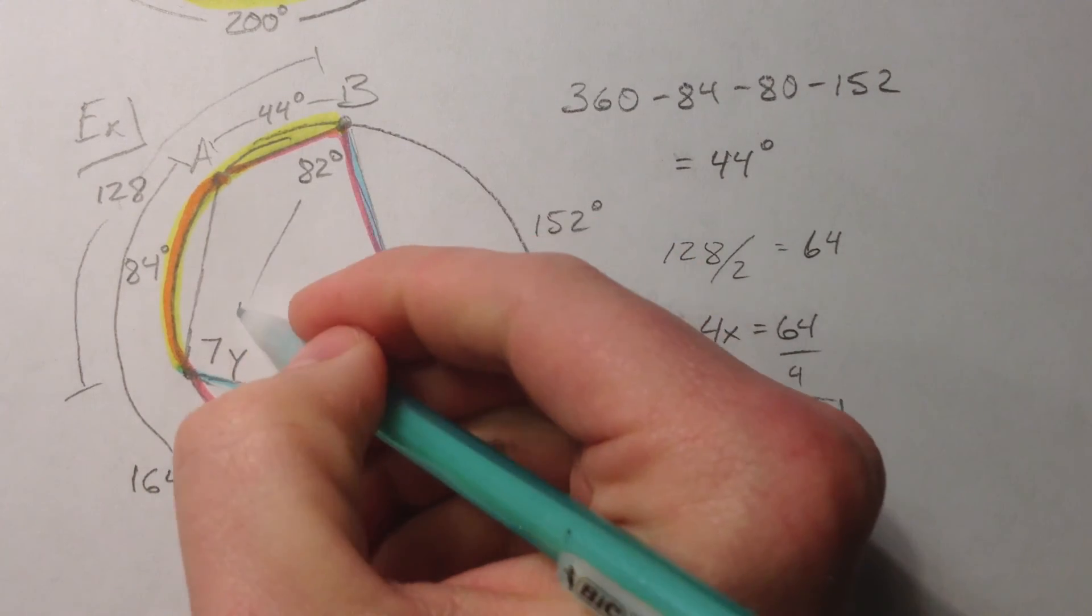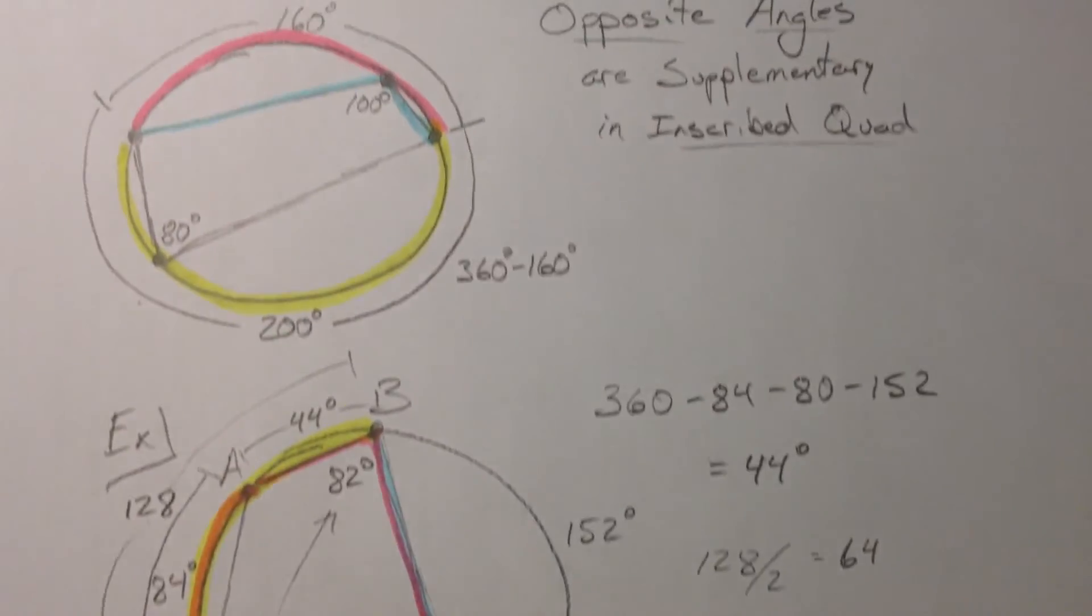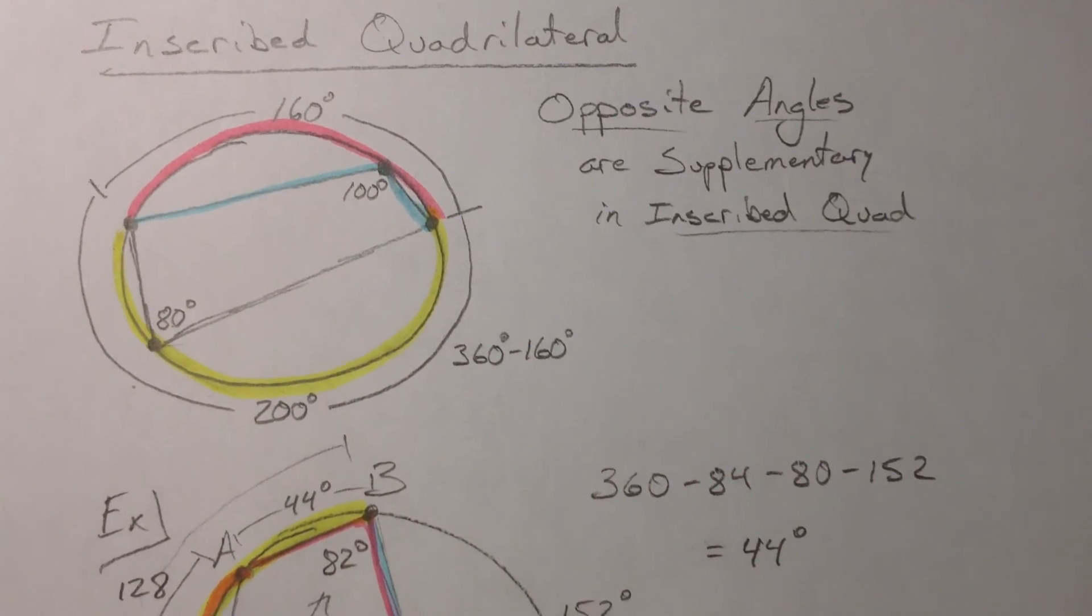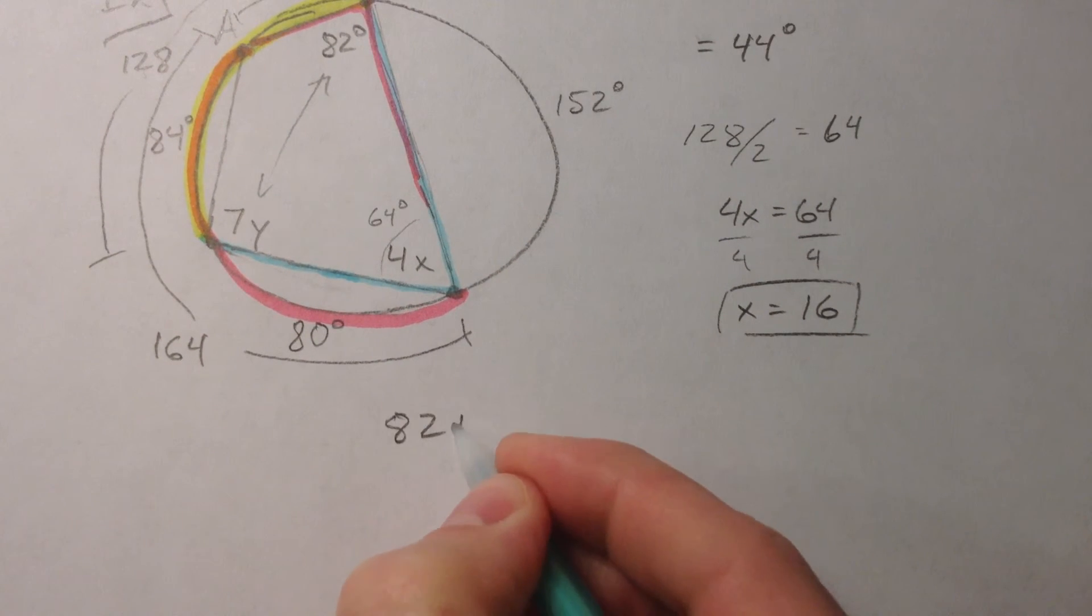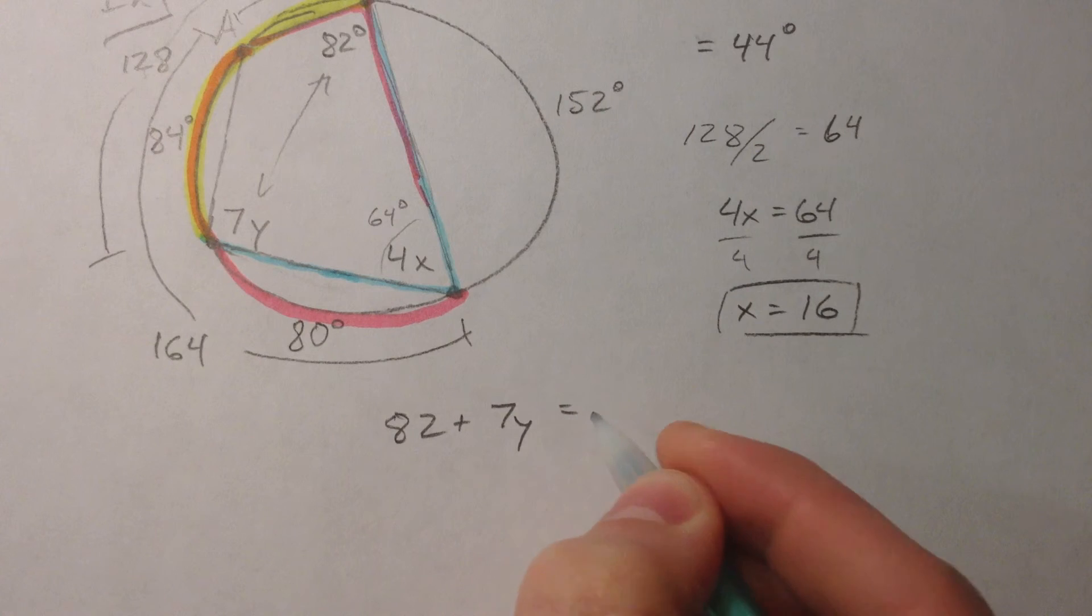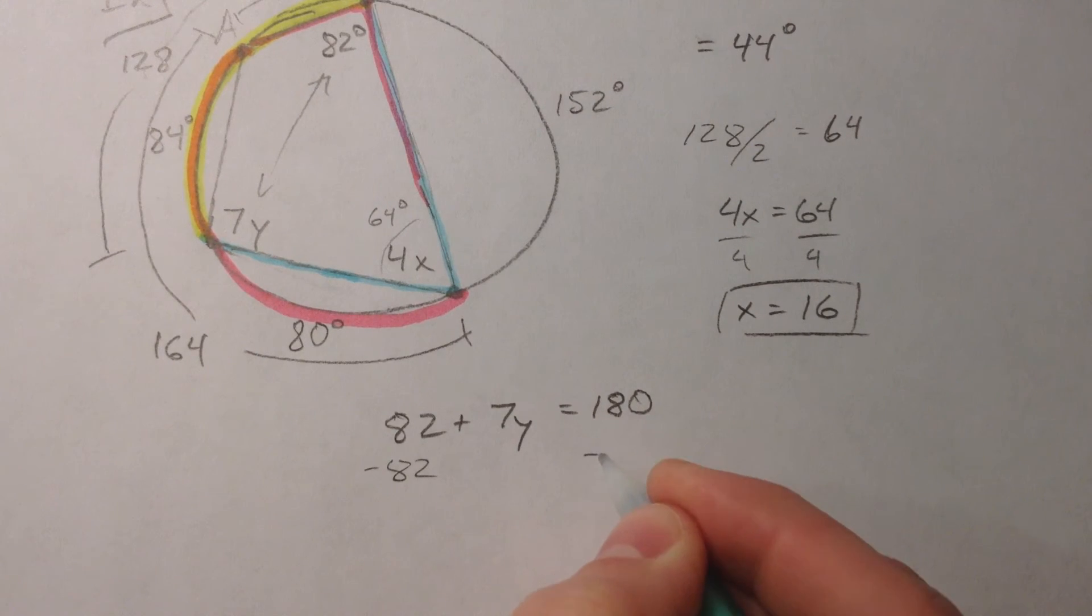Now 82 and 7y are opposite, and so 82 and 7y, we just talked about up here, inscribed angles, opposite angles are supplementary. And so you can say 82 plus 7y equals 180. So if you subtract 82 from both sides, 7y must equal 98. And 98 divided by 7 is 14, so y must equal 14.